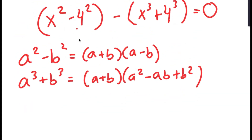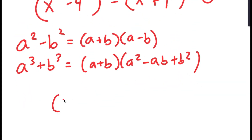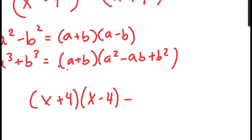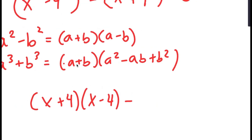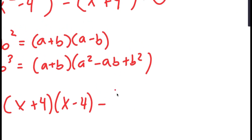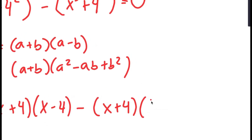So for x squared minus 4 squared, it's going to turn into x plus 4 times x minus 4. And for x to the power of 3 plus 4 to the power of 3, it's going to turn into x plus 4 times x squared minus 4x plus 16.